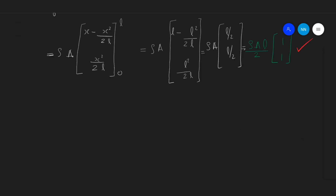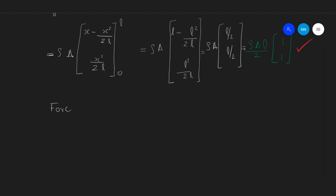From this, we can get the force due to self-weight: the force matrix equals rho*A*L/2 into [1, 1].